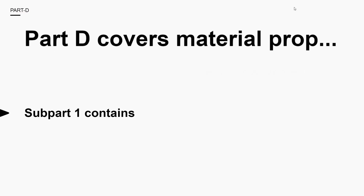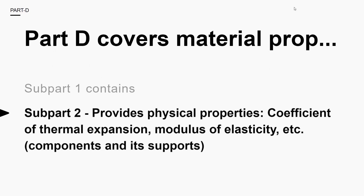Subpart 2 has tables and charts providing physical properties, such as coefficient of thermal expansion, modulus of elasticity, and other technical data needed for the design and construction of pressure vessels containing components and their supports made from ferrous and non-ferrous materials.